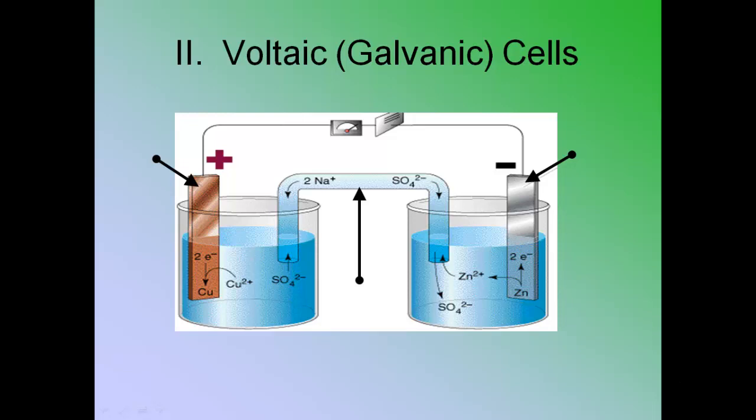Okay, so now that we understand oxidation numbers and we understand that the electrons are really what we're worried about, now we're going to talk about what's called a Voltaic Cell, also known as a Galvanic Cell.